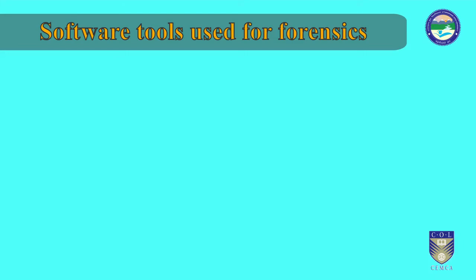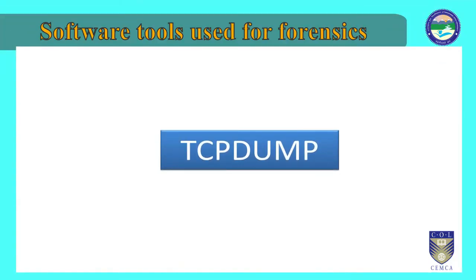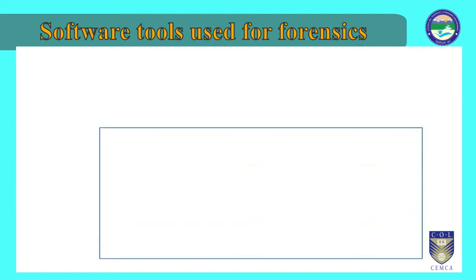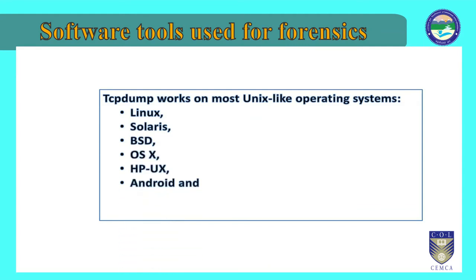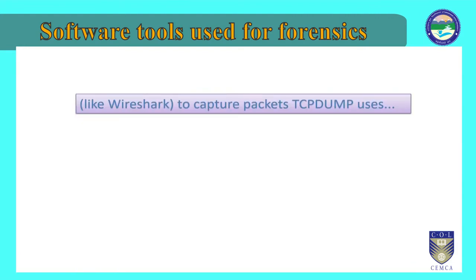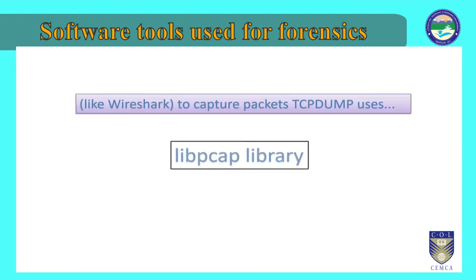Another tool is known as TCPdump. TCPdump is a common packet analyzer that runs under the command line. It allows the user to display TCP/IP and other packets being transmitted or received over a network to which the computer is attached. Distributed under the BSD license, TCPdump is free software. TCPdump works on most Unix-like operating systems: Linux, Solaris, BSD, OSX, HPUX, Android, and AIX among others. In those systems, TCPdump uses the libpcap library to capture packets. The port of TCPdump for Windows is called WinDump, and it uses WinPcap, the Windows port of libpcap.